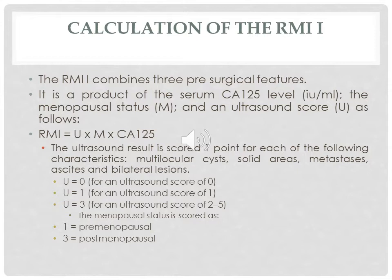Other classification systems are still under research, such as OVera1, which combines five markers together to identify malignancy. Another system makes use of both CA125 and HE4, but since HE4 is still under trial, this scoring system is also limited to research use only.